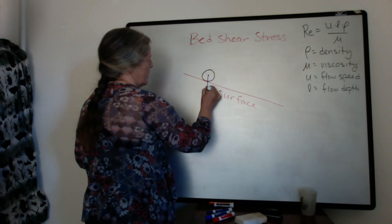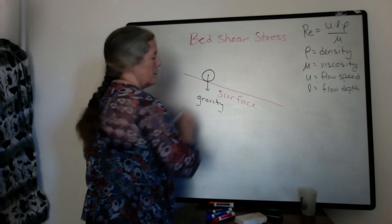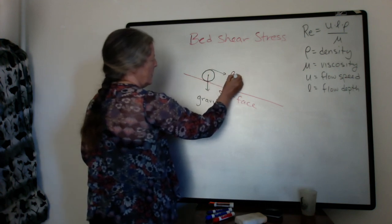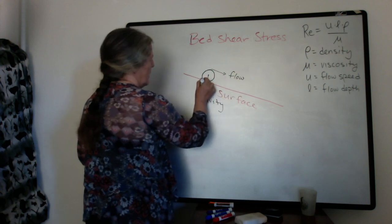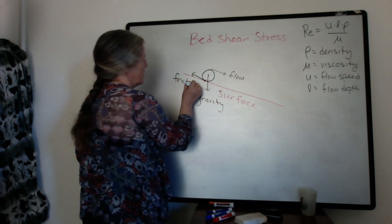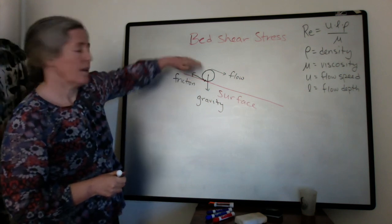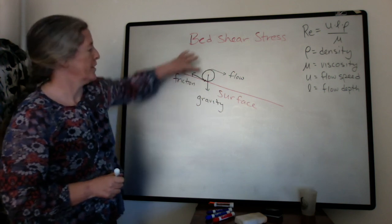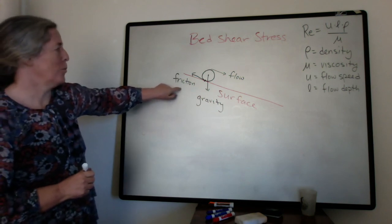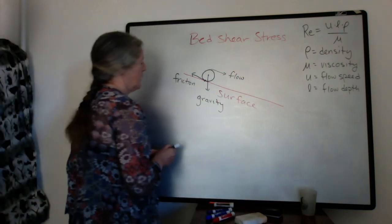There's the force of gravity. There's the differential flow on the top. And there's friction on the bottom. So the steeper the surface is, the more gravity adds a component of pushing the grain down the slope. The more friction there is, the more resistance there is to that grain actually moving. So the bed shear stress depends on a number of things.